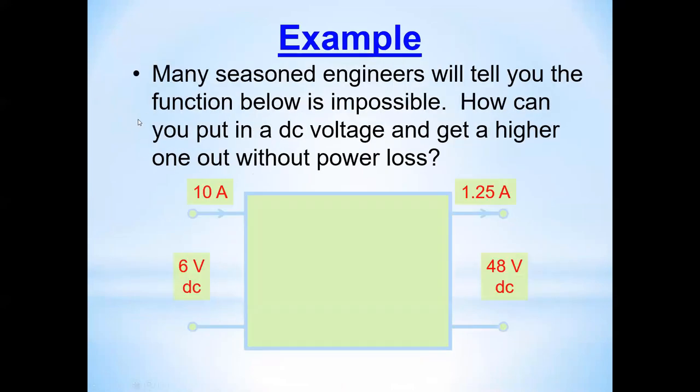Initially, when you are a power electrical engineer, if 6 volts DC is given to you with current 10 amperes, and I want this voltage to be 48 volts DC and 1.25 amperes, how can we do? This DC—if it is AC, you can do by using step-down or step-up transformer. But when you have DC, how can we do that?